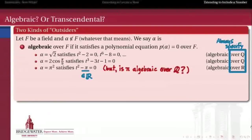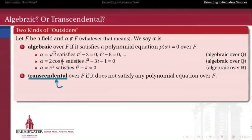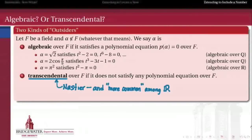It's important to always specify: algebraic over what? If pi does not satisfy any polynomial equation with rational coefficients, then we call it a transcendental number. So a number is transcendental over f if it does not satisfy any polynomial equation over f. Algebraic and transcendental take care of both possibilities: either alpha satisfies a polynomial equation over f — in which case it's called algebraic — or it does not, in which case it's called transcendental. The transcendental numbers are a little nastier, but it turns out they're also more common, at least among the real numbers.